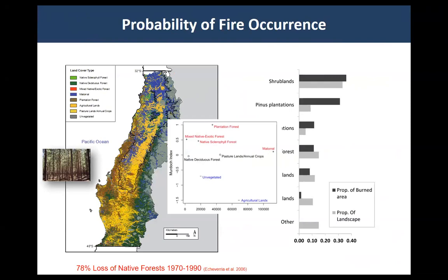These native forests transitioned to exotic forest plantations of eucalyptus and pinus, and also some shrubland and ag land. This transition has had very severe consequences for wildfire in Chile. Using the Murdoch index — essentially a forage selection index — we found that plantation forests, both eucalyptus and pinus, were through the roof in terms of selective preference for wildfire to spread in these land cover types over any other.